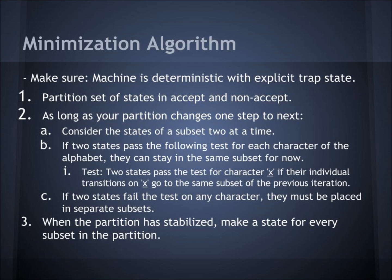Second, as long as your partition changes from one step to the next, you consider the states of the subsets two at a time. If two states pass the following test for each character of the alphabet, they can stay in the same subset. The test is: two states pass for character X if their individual transitions on X go to the same subset of the previous iteration. If two states fail the test on any character, they must be placed in separate subsets. When the partition is stabilized, make a state for every subset in the partition.